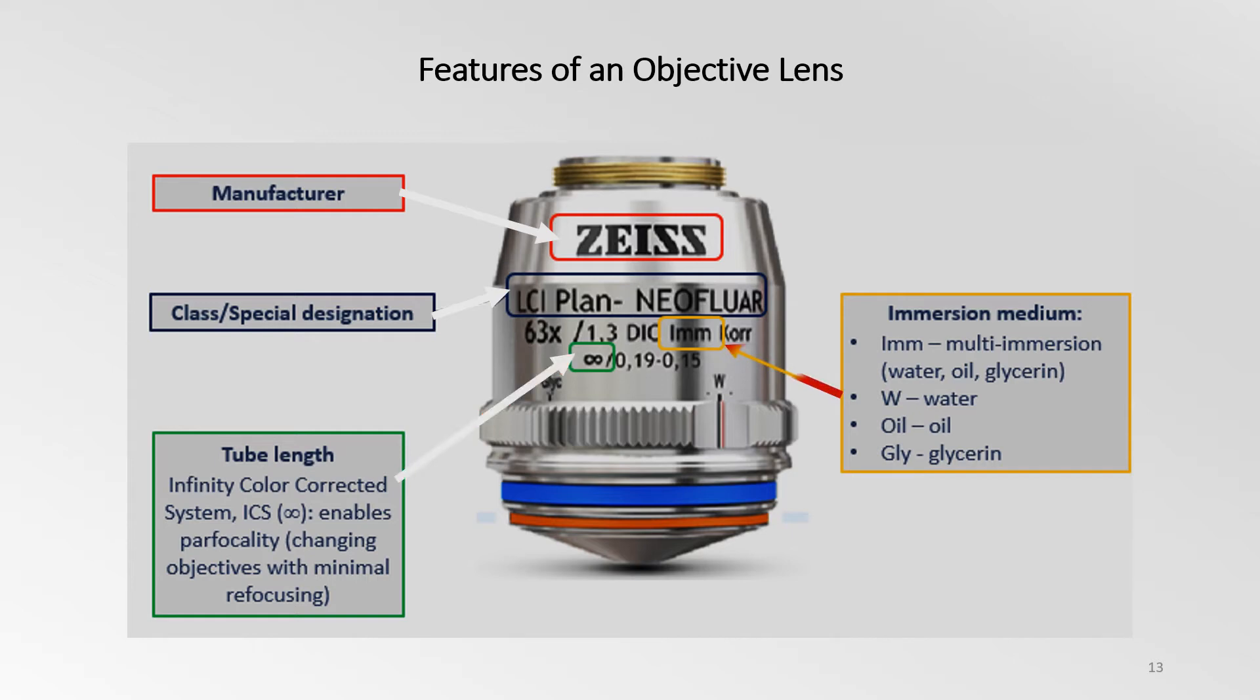Objectives designed for special immersion media are marked with either oil, glycerin, or a W for water. Some lenses are designed to be used with all three. Microscope manufacturers also label their objectives with color codes to help in the rapid identification of magnification and any specialized immersion media.